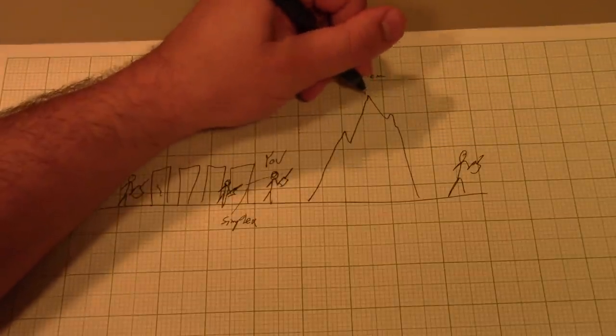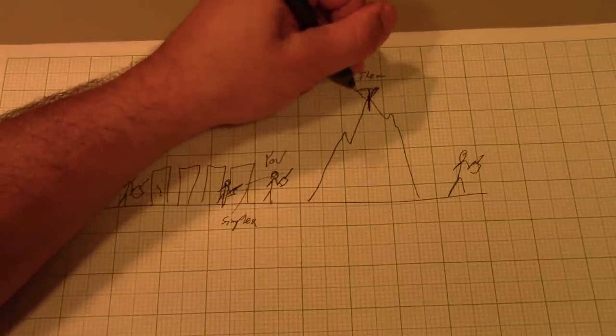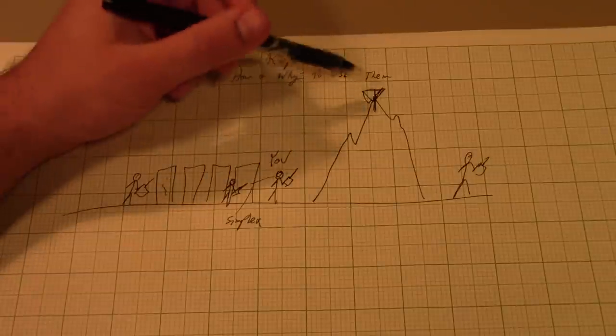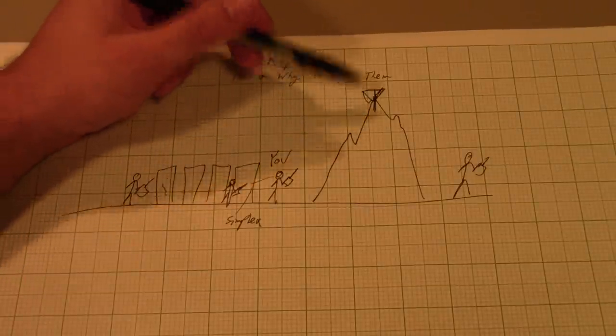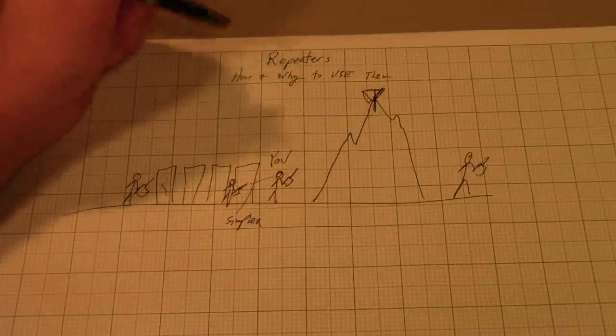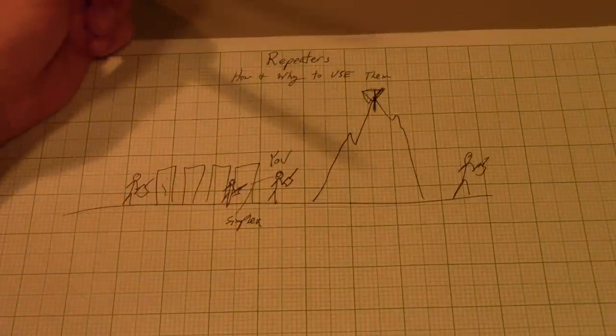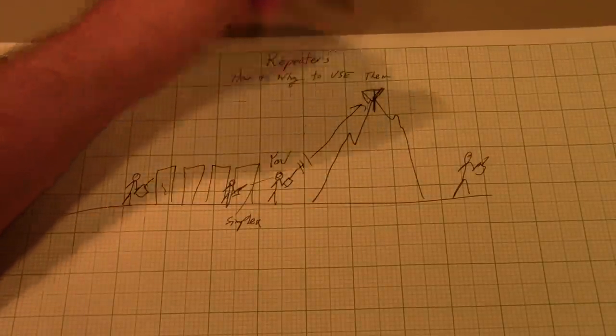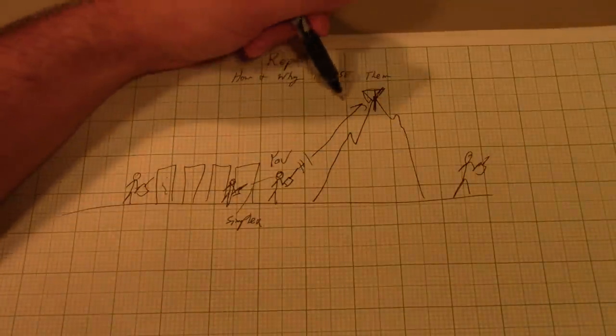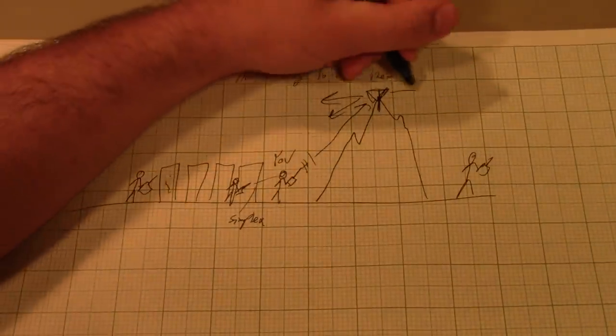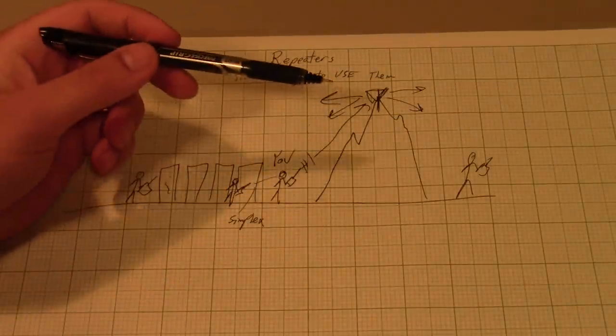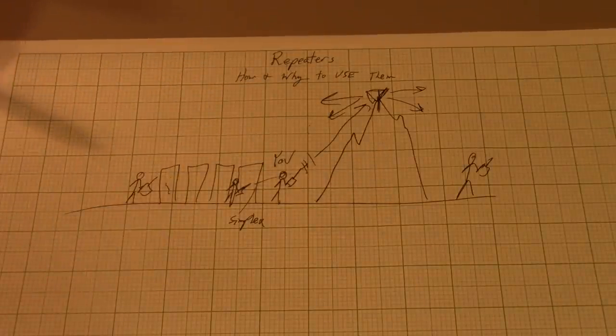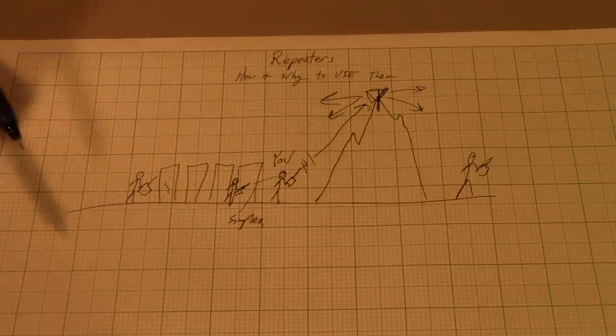And so if we were to put a repeater here, so up on the very top of this mountain, we put a repeater, and what it does is it all day and all night listens on one frequency, which is called its input frequency, and it retransmits out on its output frequency. So if you were to transmit here and go up to the repeater, the repeater would hear you and would transmit in every direction.